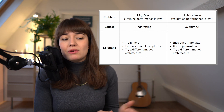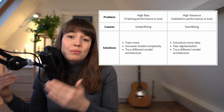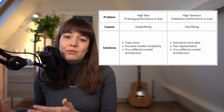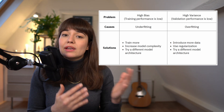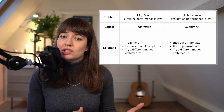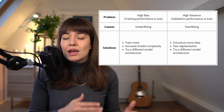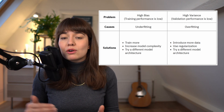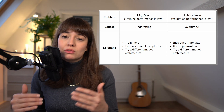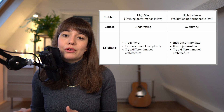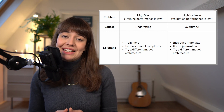Another thing you can do is to change the model architecture that you're using. Maybe you're using an architecture that does not fit your problem really well. For example, maybe you're doing image classification with deep neural networks, but trying a convolutional neural network architecture would work better and you might not underfit at the end.